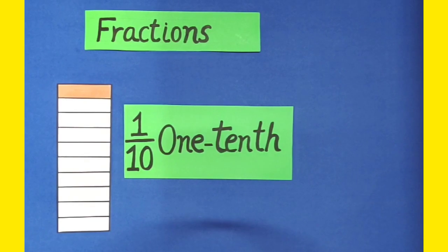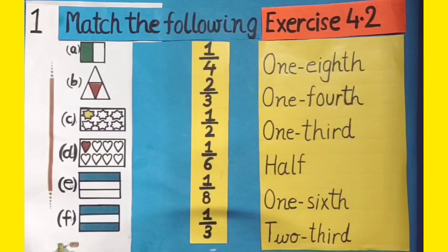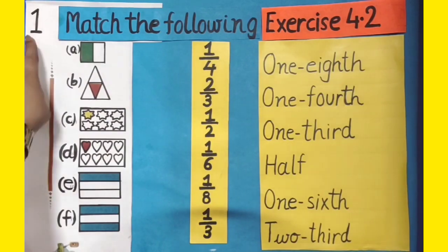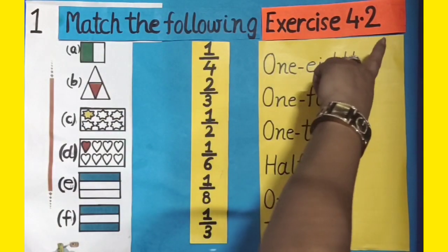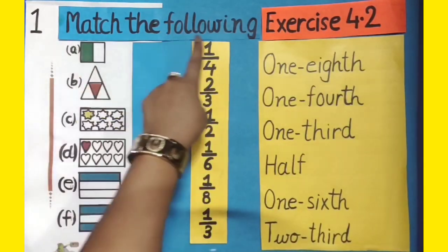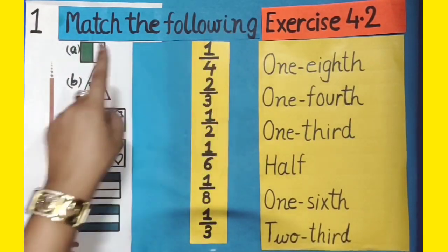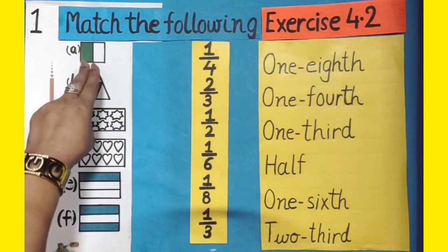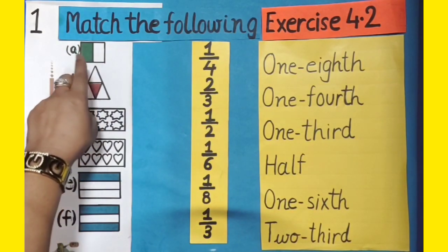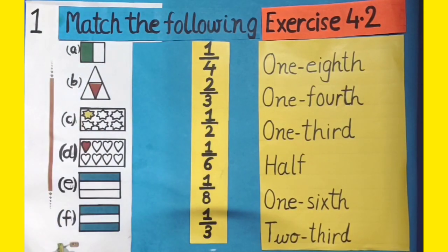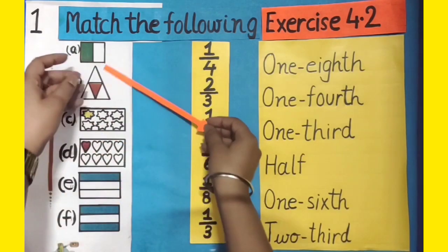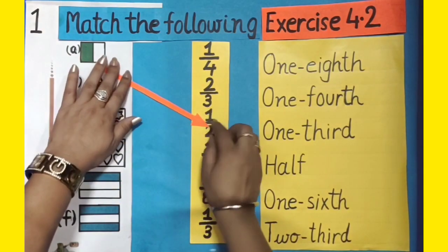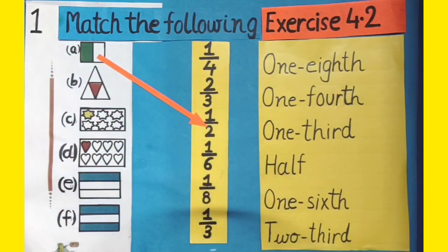Now, on its basis, we will do the next exercise. Students, let's do question number 1 of exercise 4.2 — Match the following. In part A, out of 2 equal parts, one is colourful. So its fraction form will be 1 by 2. Let's match these two.